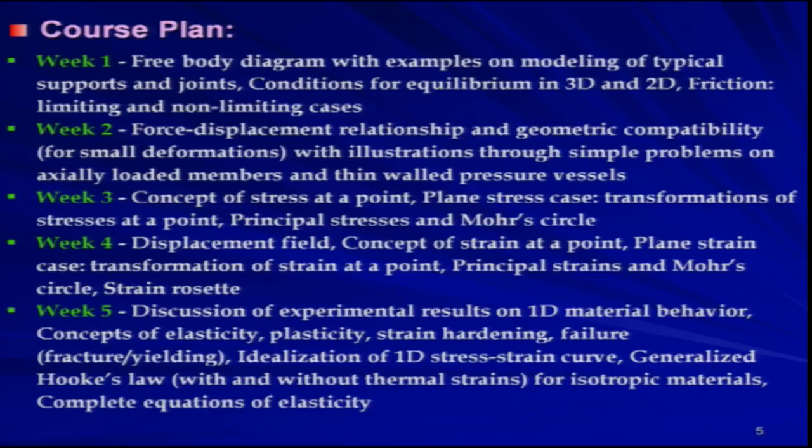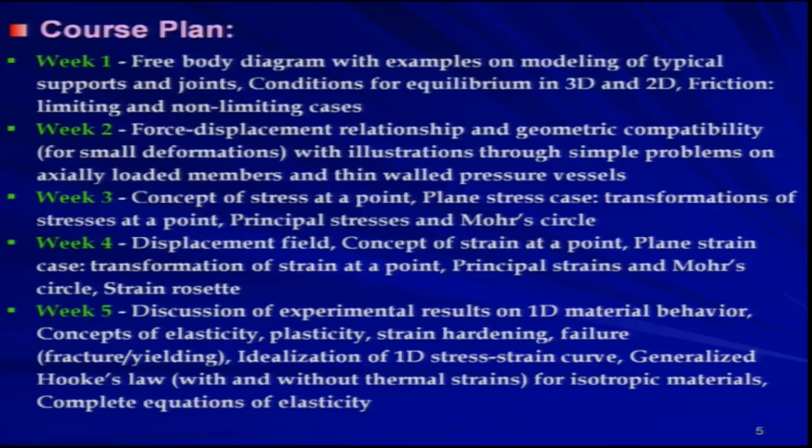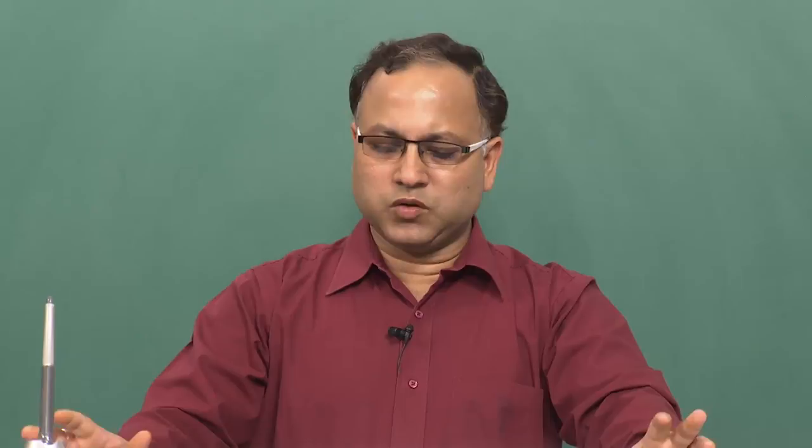In week 5, we will discuss experimental results on 1D material behavior — concepts of elasticity, plasticity, strain hardening, failure covering fracture as well as yielding — idealization of the 1D stress-strain curve, generalized Hooke's law with and without thermal strains for isotropic materials, and complete equations of elasticity. Though we are talking about plasticity, it will be covered nominally because we will mainly concentrate on elastic analysis and elastic equilibrium. When we discuss failure criteria, a little bit of plasticity will be required and will be covered depending on the requirement.